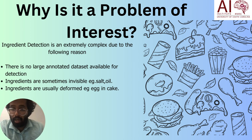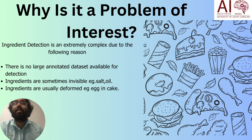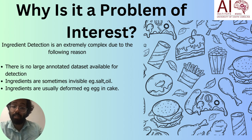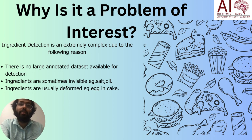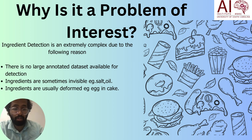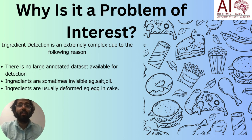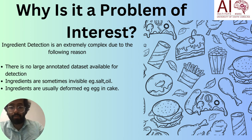Ingredients in an image are usually complex and deformed. Tomato, for example, in a ketchup might be completely different from tomato in a salad. Various cooking actions and heat completely deform and change the shape of the ingredient, making it difficult to detect.